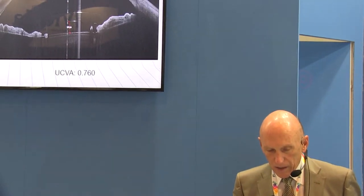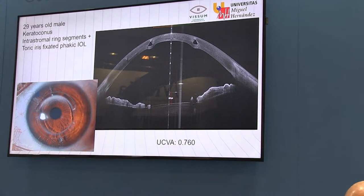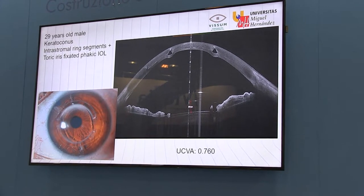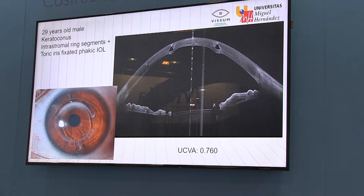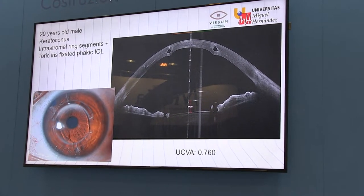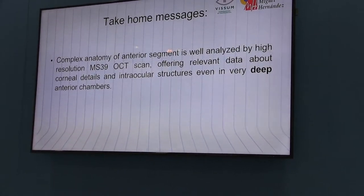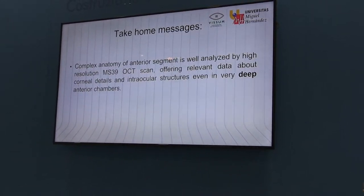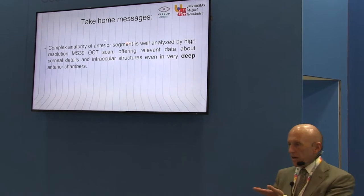Let me go to this case: a 29-year-old male with keratoconus. This patient had intrastromal ring segments and a toric intraocular lens fixed at the iris. This is the lens, these are the rings, this is the anterior chamber — a huge anterior chamber — and in spite of the very deep chamber, the resolution is untouched. Look here how good is the detail about the vault, the anterior and posterior surfaces of the lens. This is not possible to obtain with other devices like the Cirrus, where the anterior segment attachment of this posterior segment device cannot achieve this precision or depth of penetration. These complex anatomical conditions are analyzed with striking accuracy by the MS-39.